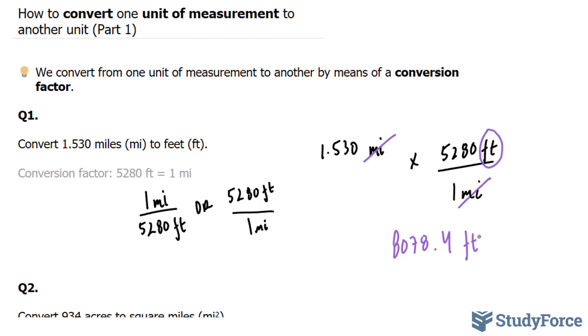So what we do next is multiply this number times 5280 and we end up with 8078.4 feet. Now, if you are expected to take into consideration significant digits, take a look at the original number that was provided. The original number that was provided contained four significant digits. One, two, three, four. The conversion factor, on the other hand, contained three significant digits.